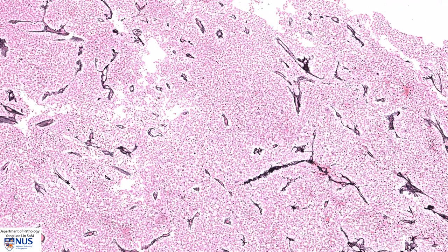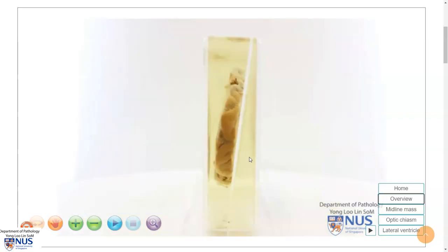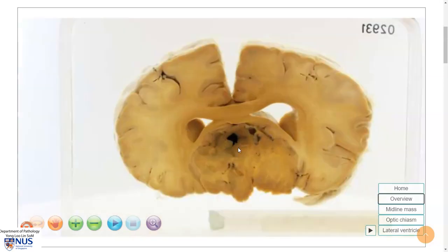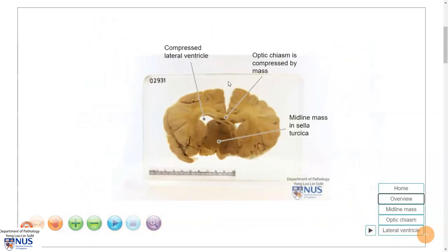Now let's take a quick look at the gross appearance of a pituitary adenoma. This is a virtual pathology specimen showing a coronal section of the brain. We can see a very large, quite fleshy, solid-appearing mass in the region of the sella turcica. There are some areas of hemorrhage. This is compressing on the optic chiasm, and this is the reason why often these patients complain of bumping into things — this is due to visual field defects.